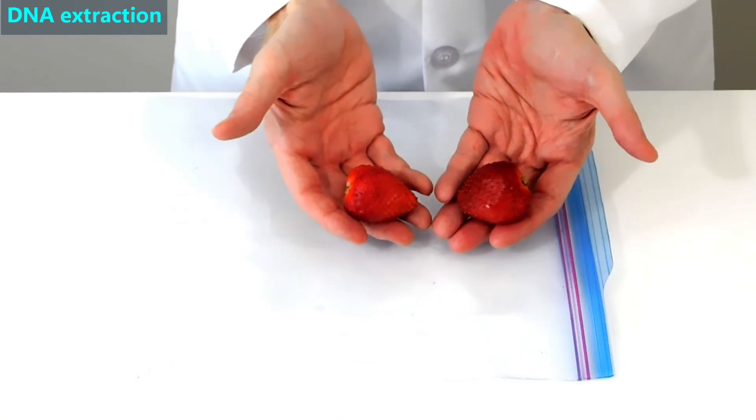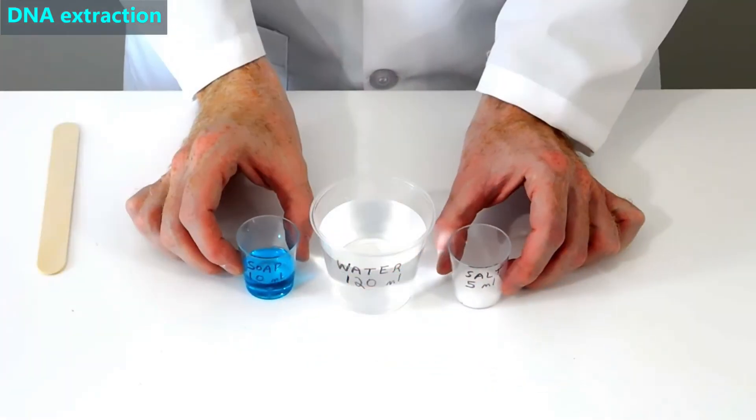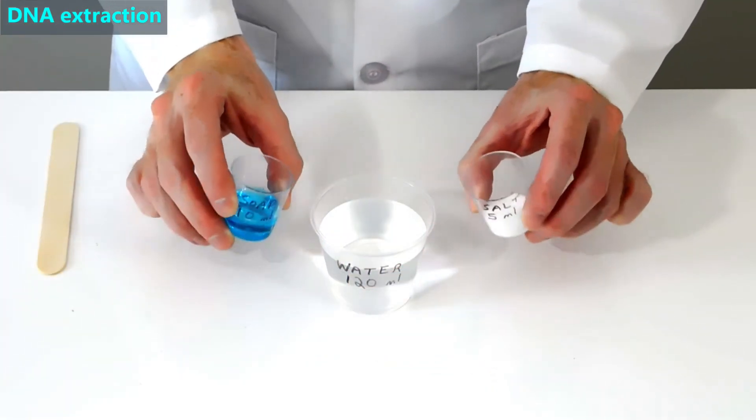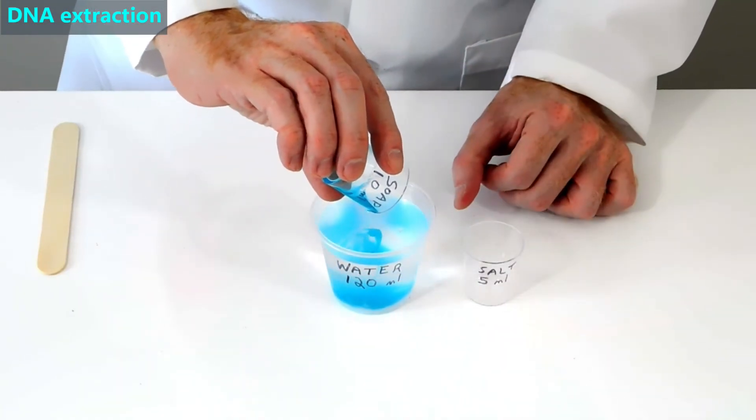To extract DNA from strawberries, we start by mashing two strawberries in a plastic bag. Then we add 5 ml of salt and 10 ml of liquid soap to 120 ml of water.